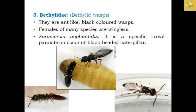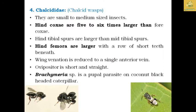The family Chalcididae, known as chalcid wasps, are small to medium-sized insects. The hind coxa are five to six times larger than the fore coxa. The hind tibial spurs are larger than the mid tibial spurs, and the hind femora are large with teeth beneath. Example: Brachymeria species, a pupal parasite on coconut black-headed caterpillars.